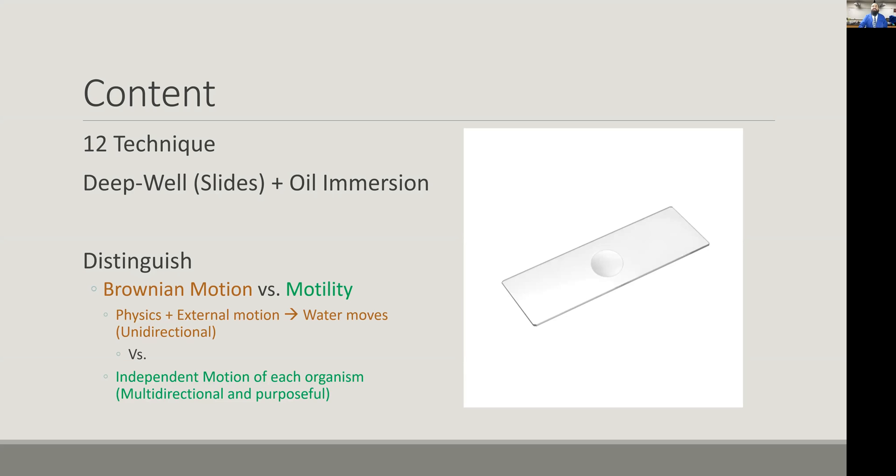With Brownian motion, everything looks like it's carried by the same current, flowing in the same direction. That's not real motion. Whereas with true motility, you'll see individual organisms with independent motion in various directions, making turns, going up and down in the Z plane, and shifting in all 360 degrees. That's the plan behind lab 12.